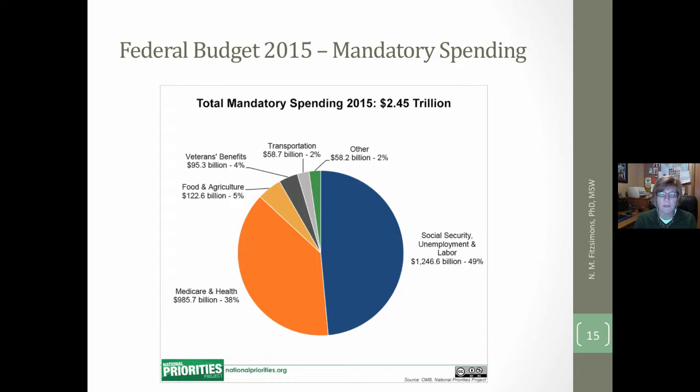This slide looks at mandatory spending, breaking it down with almost half going to Social Security and unemployment, and 38% going to Medicare and health-related spending.